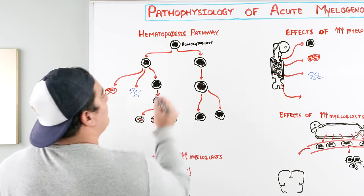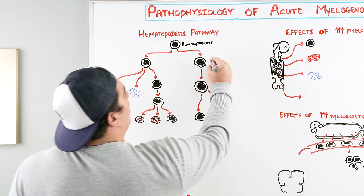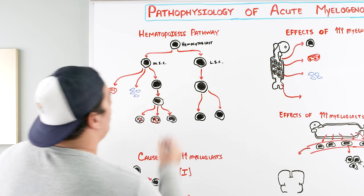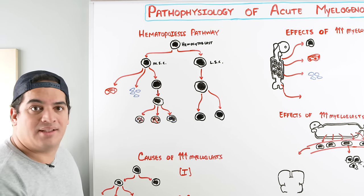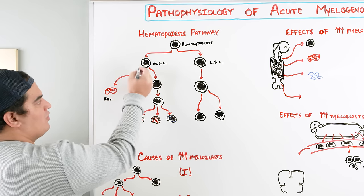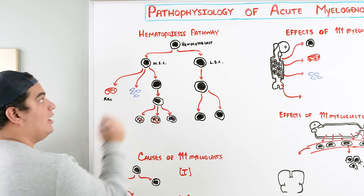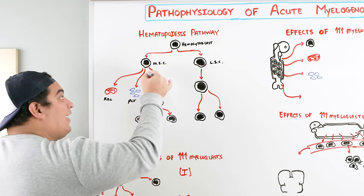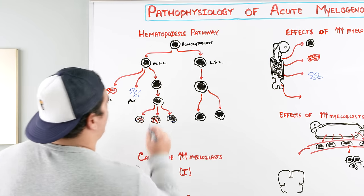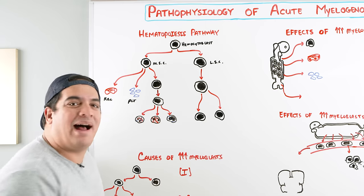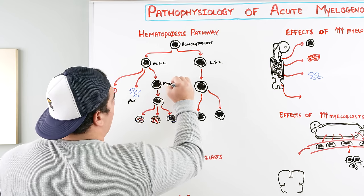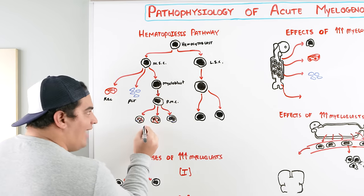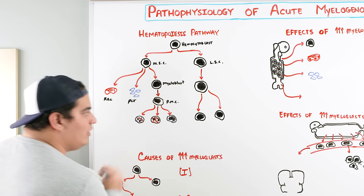What happens is the hemocytoblast differentiates into two cell lines: one is called the lymphoid stem cell, and the other is called the myeloid stem cell. The myeloid stem cell then differentiates into a couple of different cell lines — it becomes a red blood cell via the erythroblast becoming an erythrocyte, it becomes a platelet via the megakaryoblast, and it can become something called a myeloblast.